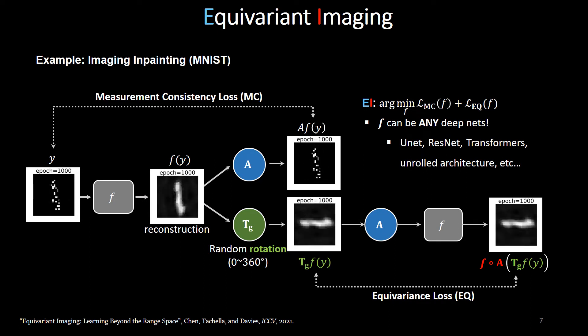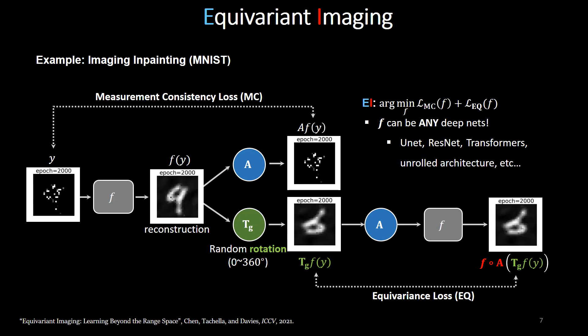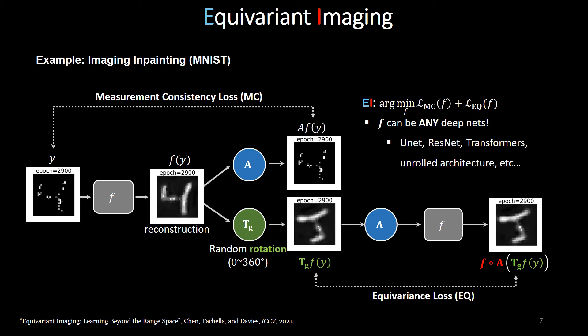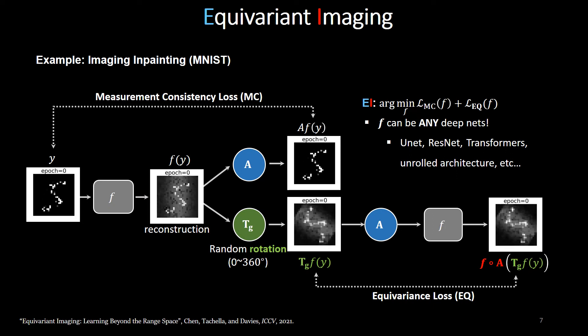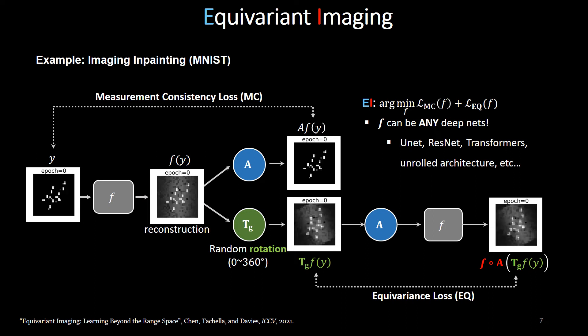Notably in EI, the function f can be implemented by any advanced neural networks, such as U-Net, ResNet, transformers, or unrolled architectures.